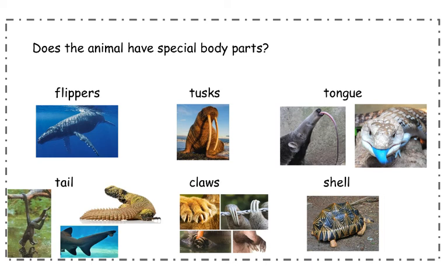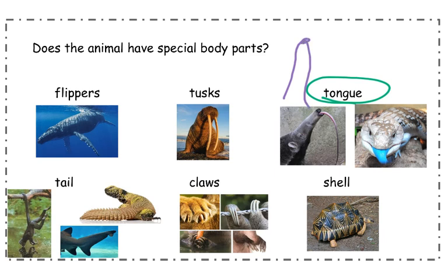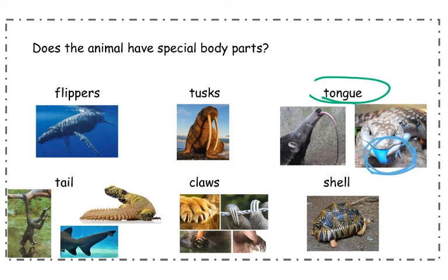An animal's tongue could actually be their special body part. This anteater has a very long tongue, and they use their tongue to stick it in an ant hill and scoop up all the ants — that's how they eat their food. This lizard has a special tongue too — it's blue. This is called a blue-tongue skink. They use their blue tongue to scare away other animals; they'll show off their blue tongue and animals will say, I don't want to eat that.